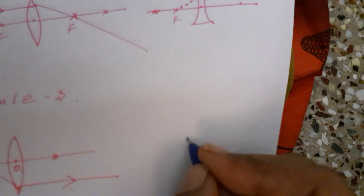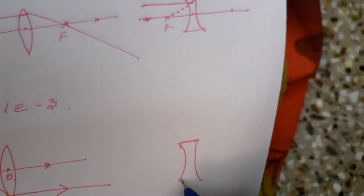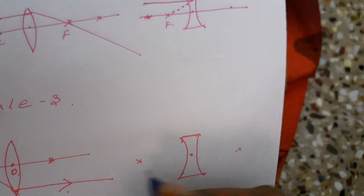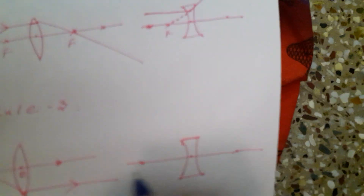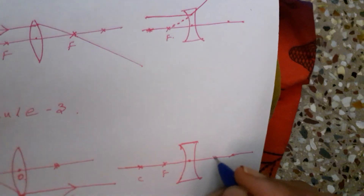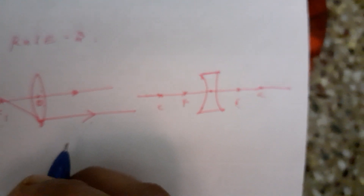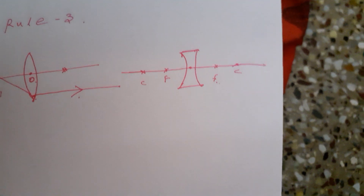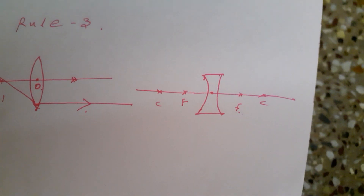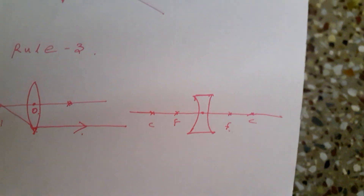The third rule for the concave lens: draw a concave lens, keep the optic center and the centers of curvature. In between the optic center and the center of curvature, draw the principal focus. The third rule: the light ray which is passing through the principal focus will appear to diverge parallel to the principal axis.